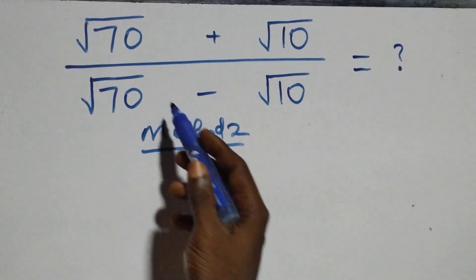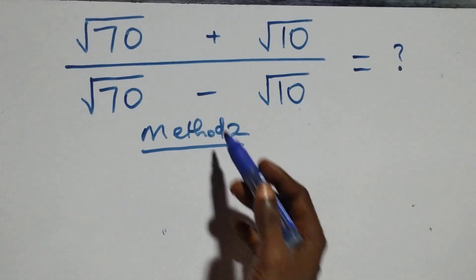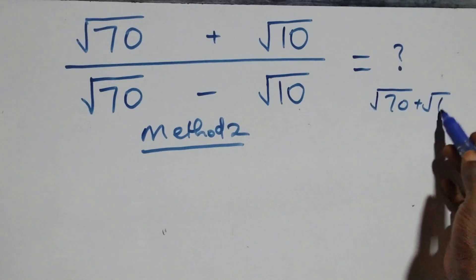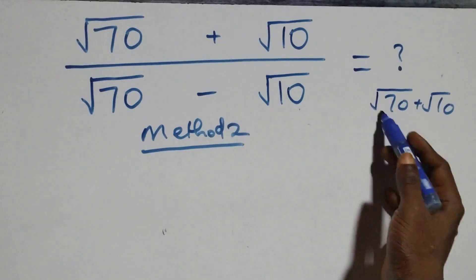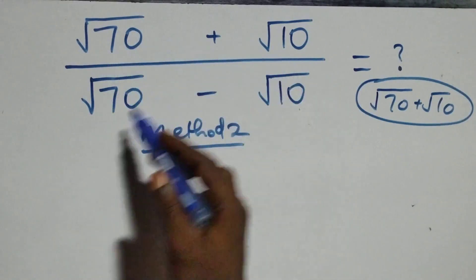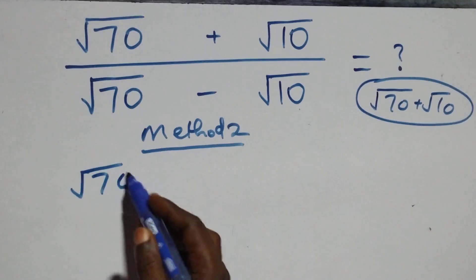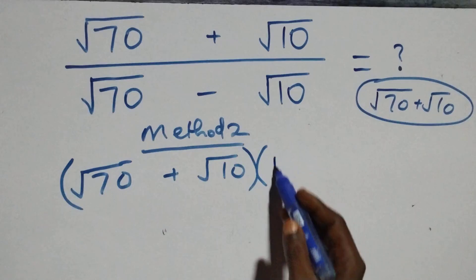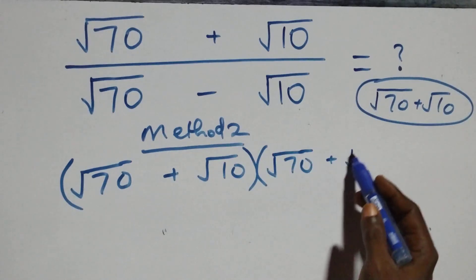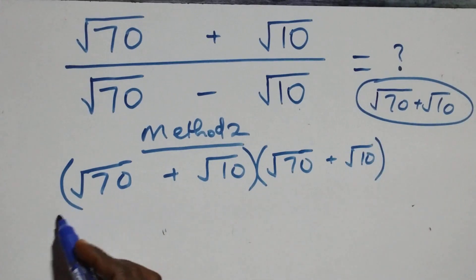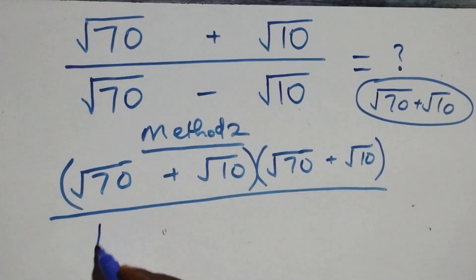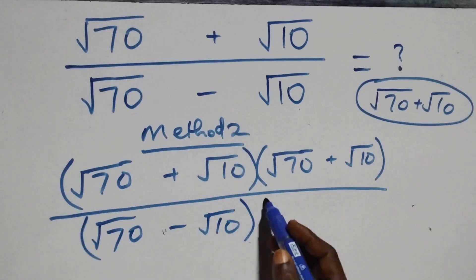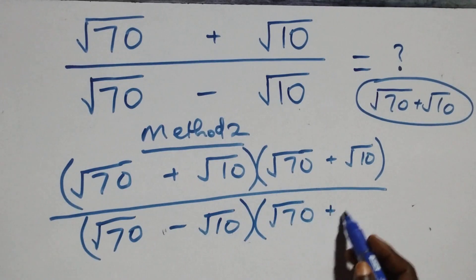In the second method, we rationalize directly by multiplying the numerator and denominator by the conjugate of the denominator. The conjugate of (√70 − √10) is (√70 + √10) — only the sign changes. We multiply the numerator and denominator by (√70 + √10). The numerator becomes (√70 + √10) times (√70 + √10), and the denominator is (√70 − √10) times (√70 + √10).